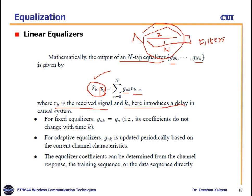For a fixed equalizer, the coefficients g_n(k) = g_n do not change with time k, so we write them simply as g_1, g_2, and so on. For an adaptive equalizer the coefficients vary with time, so we write g_1 at the first time slot, g_2 at the second time slot, meaning there can be different coefficients for each time instant.